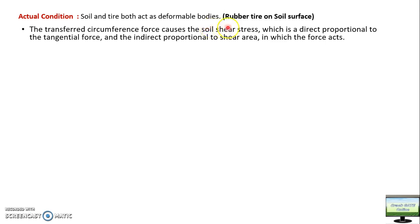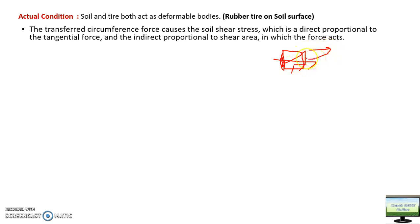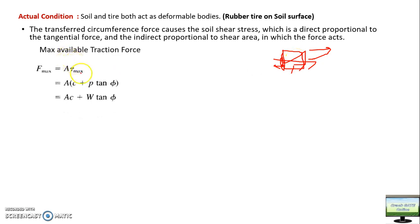In this case, the circumferential force will cause soil shear stress. Suppose this is the soil surface and you have tyre lugs — this tyre lug will penetrate into the soil and try to shear off the soil accumulated here. This is your direction of motion, and the tyre lug will try to push this soil forward. Due to this pushing, stress is generated in the soil which is directly proportional to this circumferential force and indirectly proportional to the tyre footprint area. So tau_max is directly proportional to F and inversely proportional to area A.